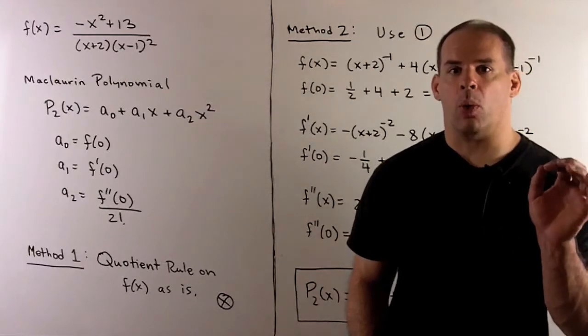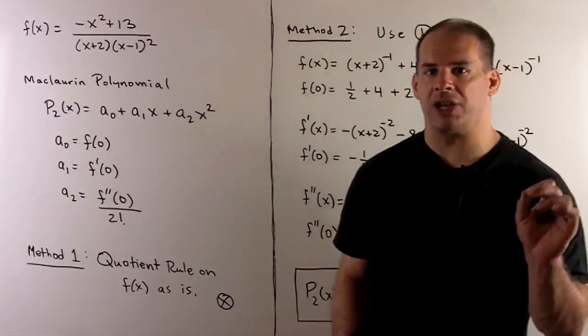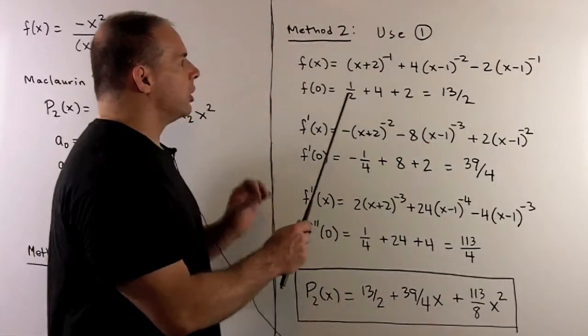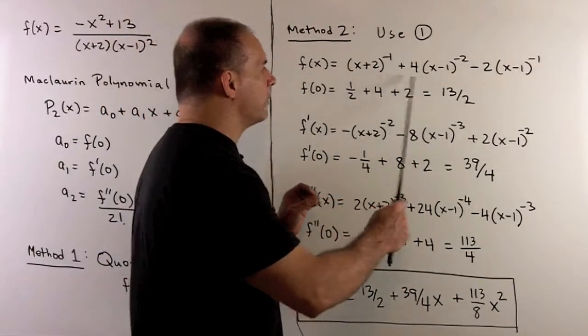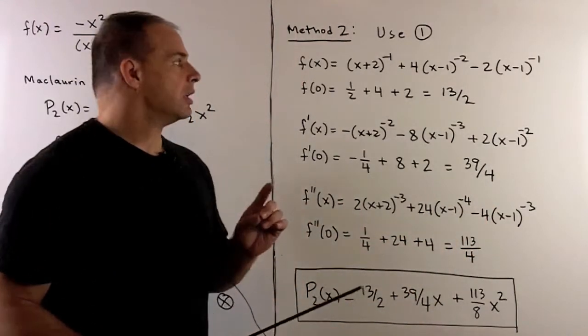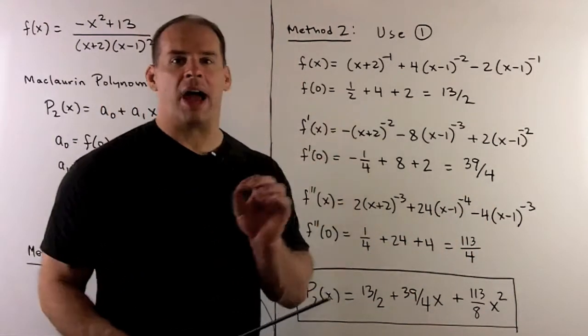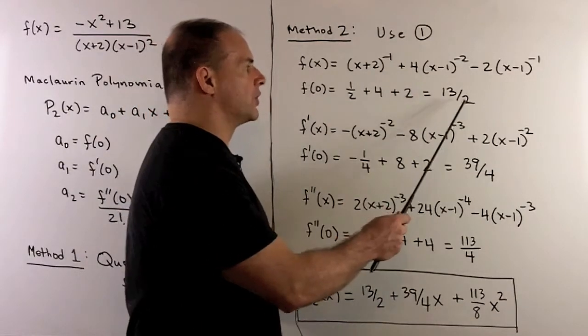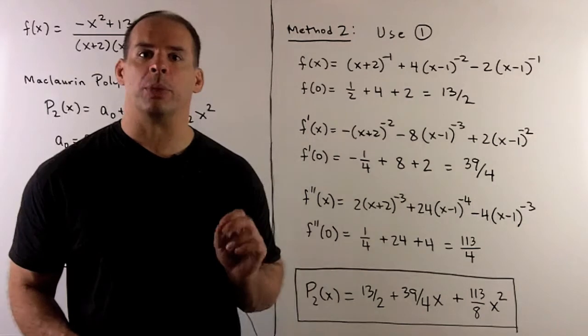Instead, using part 1 with our partial fraction expansion, we've written f in terms of a bunch of items that are easy to take the derivative of. So if we apply our recipe for f(0), we get 13/2. We've already seen that on the previous board.